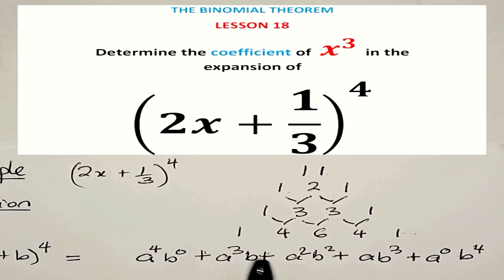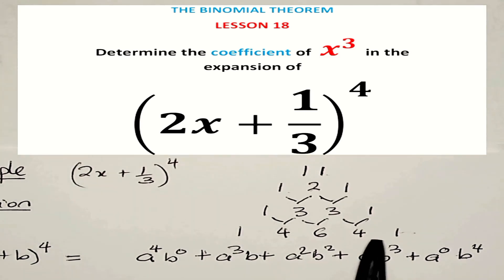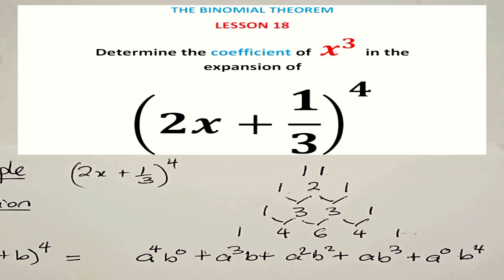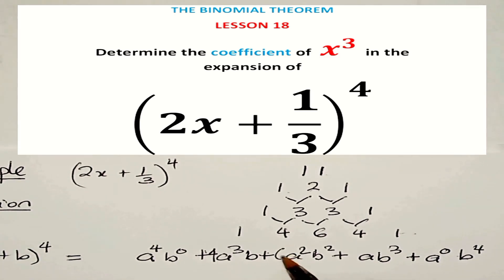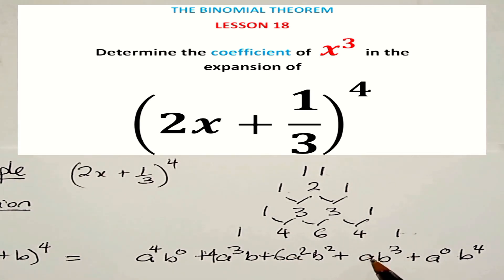The fourth row of Pascal's triangle gives us the binomial coefficients. These are 1, 4, 6, 4, and 1.